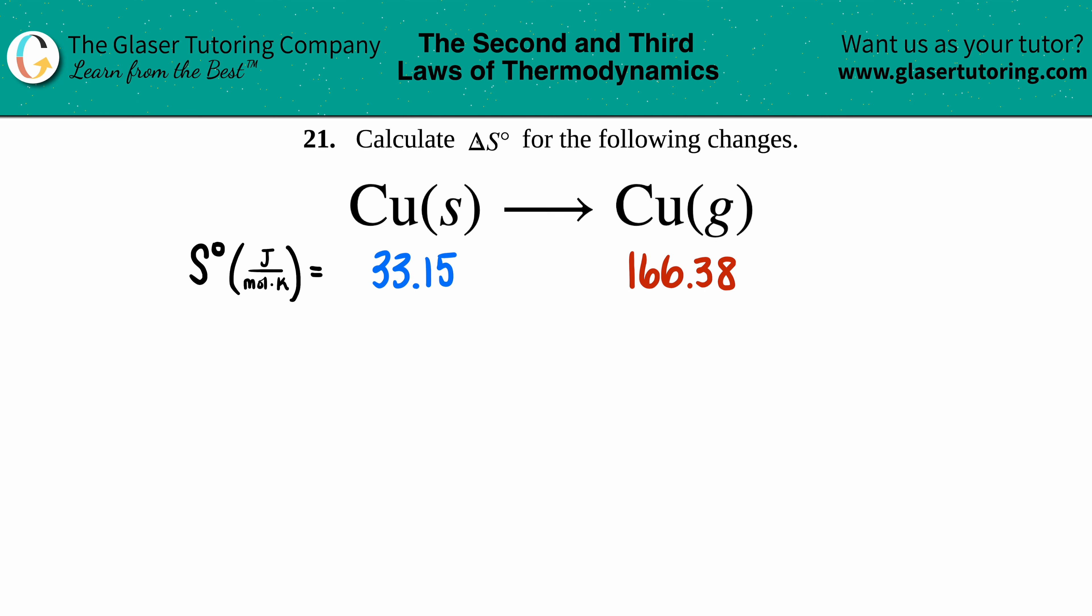Number 21: Calculate the delta S naught for the following changes, and we have copper solid yields copper gas. So we're trying to find the delta S, which just means we're trying to find the change.